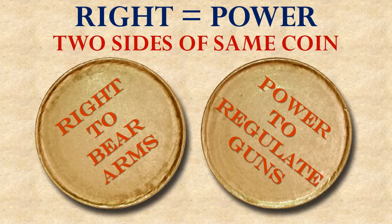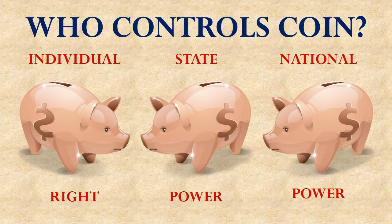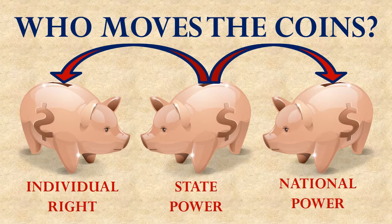The reason this is an important distinction becomes clear if we go back to a concept from earlier in this unit. Rights and powers are two sides of the same coin. Once we've decided that, the next thing is to figure out where that coin is kept. If individuals keep the coin, we call it a right. If one or the other levels of government keeps it — either state or national — we're going to call it a power. When we create, destroy, or redefine rights, we are basically moving the coins around from one bank to another.